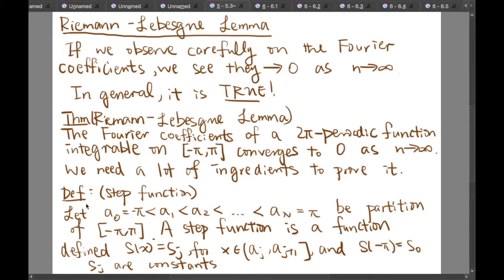So let's define what that function means first. Let a₀, a₁, a₂ up to aₙ be a partition of the closed interval negative π to π. A step function is a function defined as S(x) equal to Sⱼ for x inside the half open interval [aⱼ, aⱼ₊₁) and S(-π) is equal to S₀, where Sⱼ are constants.